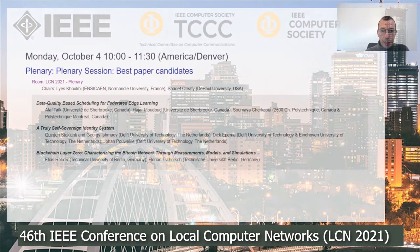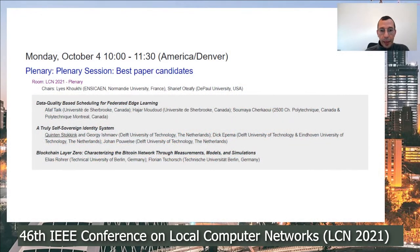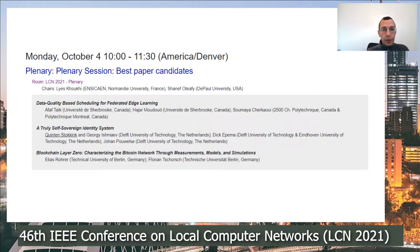Welcome again to LCN 2021. We have three papers that have been selected through a strict review process. Three candidates for the best papers: the first one is Data Quality Based Scheduling for Federated Edge Learning, the second one is a Trust Self-Serving Identity System, and the third work is a Blockchain Layer Zero.